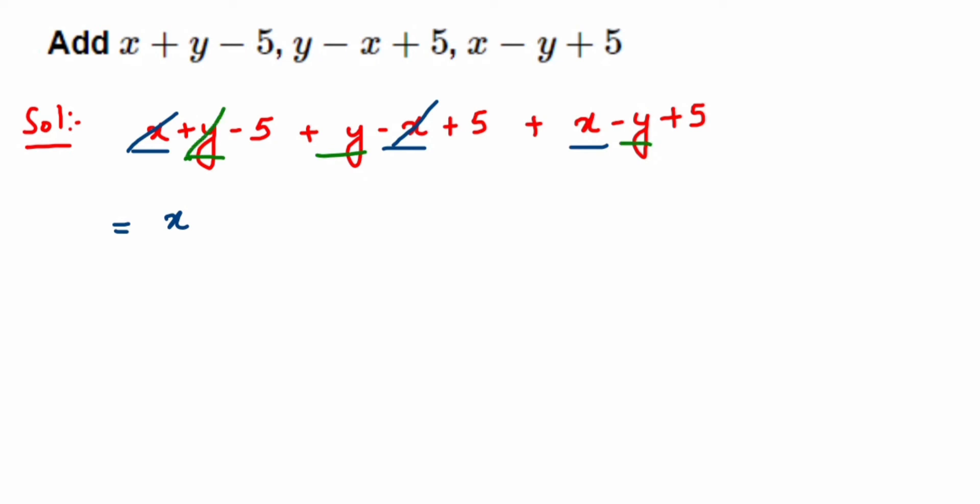For the constants, we have minus 5, plus 5, and plus 5. Minus 5 and plus 5 cancel, leaving us with plus 5. So the answer is x plus y plus 5. Now let me show you the column method.